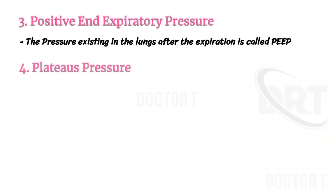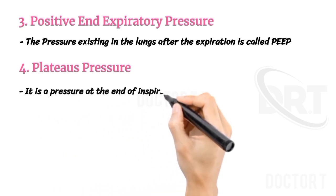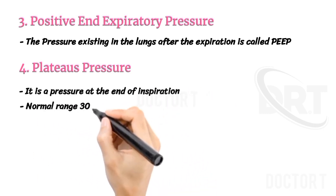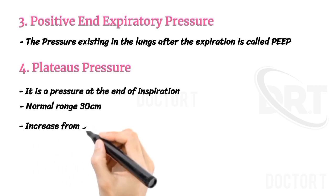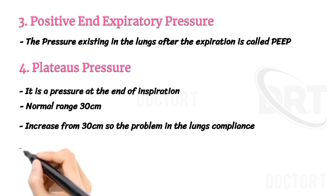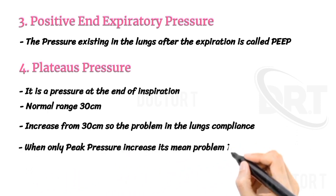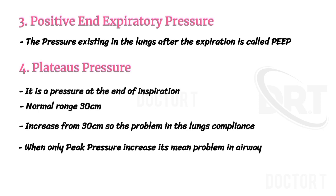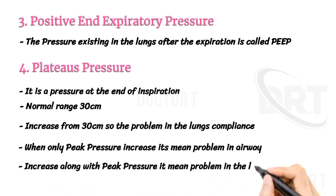Plateau Pressure: it is the pressure at the end of inspiration. Normal range is 30 cmH2O. When plateau pressure increases beyond 30 cmH2O, it indicates a problem in lung compliance. When only peak pressure increases, it means a problem in the airway. If plateau pressure increases along with peak pressure, it means a problem in the lungs.